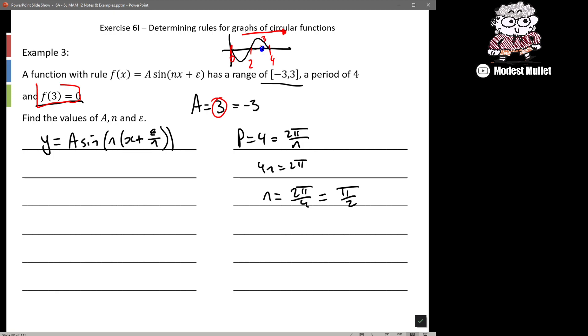But clearly we can see if we went with, let's let, we're going to let a equal 3. So our base graph before we translate it is going to look like that. That has a period of 4.